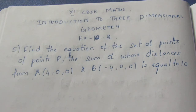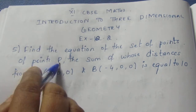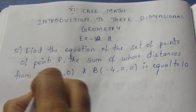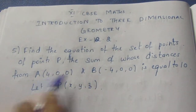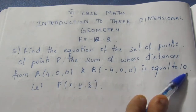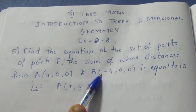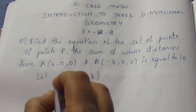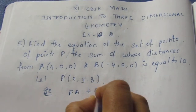Find the equation of the set of points P such that the sum of distances from A and B is equal to 10. We have given a point P but they have not given the coordinates of P, so we are going to let P be (X, Y, Z). The given information is PA plus PB is equal to 10.